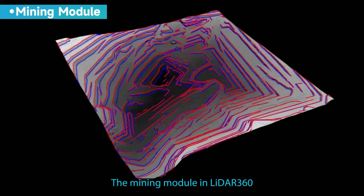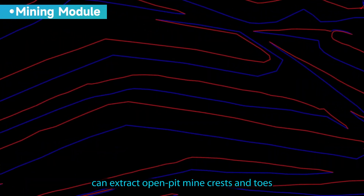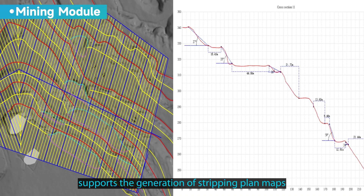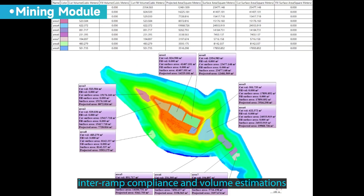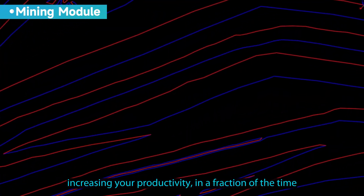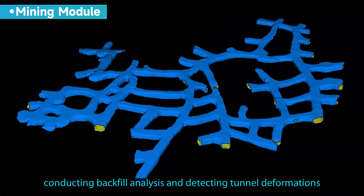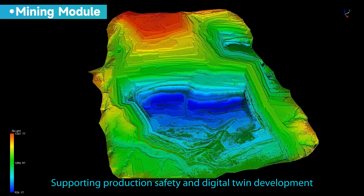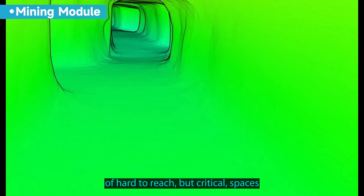The mining module in LiDAR 360 can extract open-pit mine crests and toes, supports the generation of stripping plan maps, inter-ramp compliance, and volume estimations, increasing your productivity in a fraction of the time. Automated tunnel modeling conducts backfill analysis and detects tunnel deformations, supporting production safety and digital twin development of hard-to-reach but critical spaces.